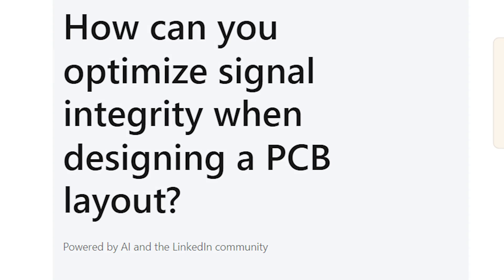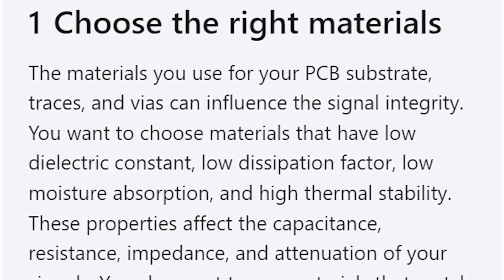How can you optimize signal integrity when designing a PCB layout? There it is again — AI decided to use the word optimize. Number one: choose the right materials. The materials you use for your PCB substrate, traces, and vias can influence signal integrity — you want to choose materials with low dielectric constant. Apparently AI thinks the only way to have good signal integrity is to have low Dk and low dissipation factor. That is not correct. Regular FR4 will work fine for a lot of applications. However, to the AI's credit, it does qualify the statement: for high-speed or high-frequency signals, you may need to use materials with lower dielectric constant and higher glass transition temperature. You may need to use — as in, it's an engineering decision.